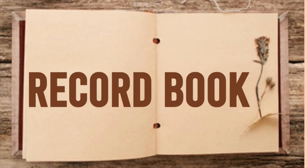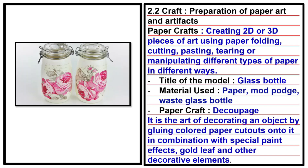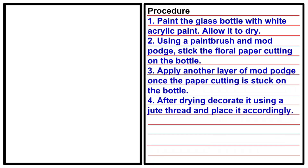That's all about paper craft activities. Now there is a procedure to write this information in the record book. First, you need to write the topic, then the meaning of paper craft, title of the model made, material used, and the technique of paper craft you have used, defining the same and writing its meaning. Finally, end your report by writing the procedure of preparing your model.